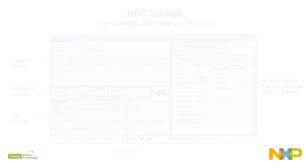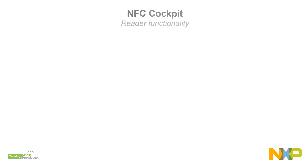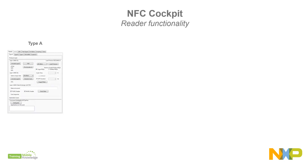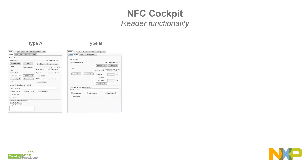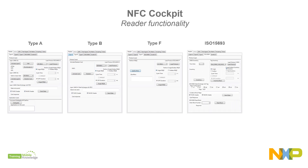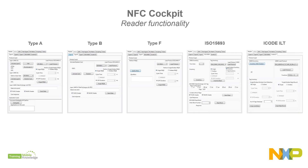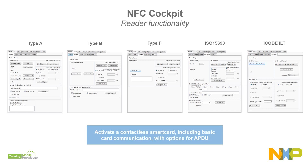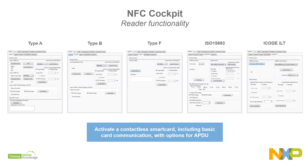The right-hand part of the UI consists of multiple tabs that allow you to test and configure many other features. The reader tab allows you to activate contactless smart cards of Type A, Type B, Type F, ISO 15693, and iCode ILT tags correspondingly.